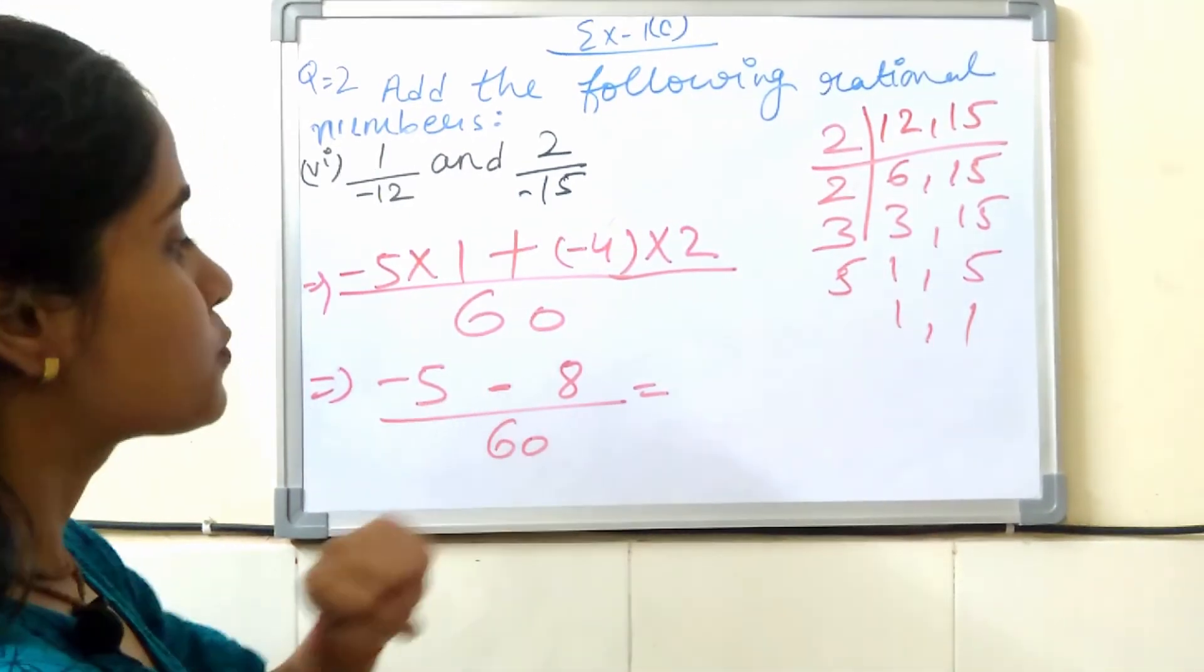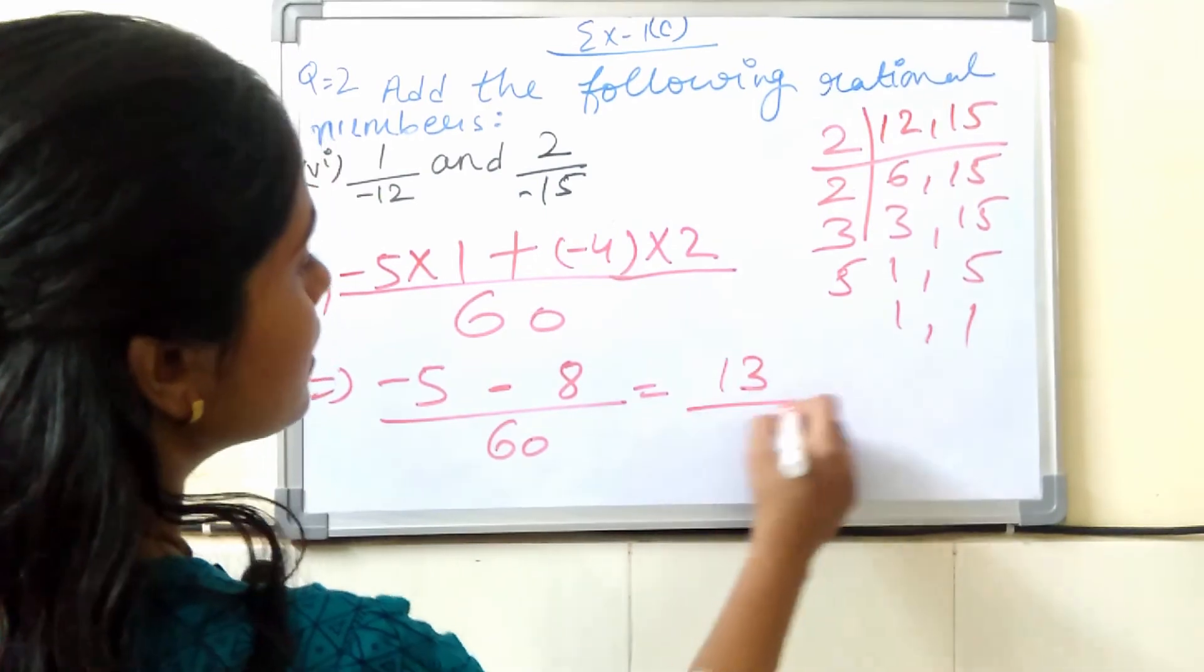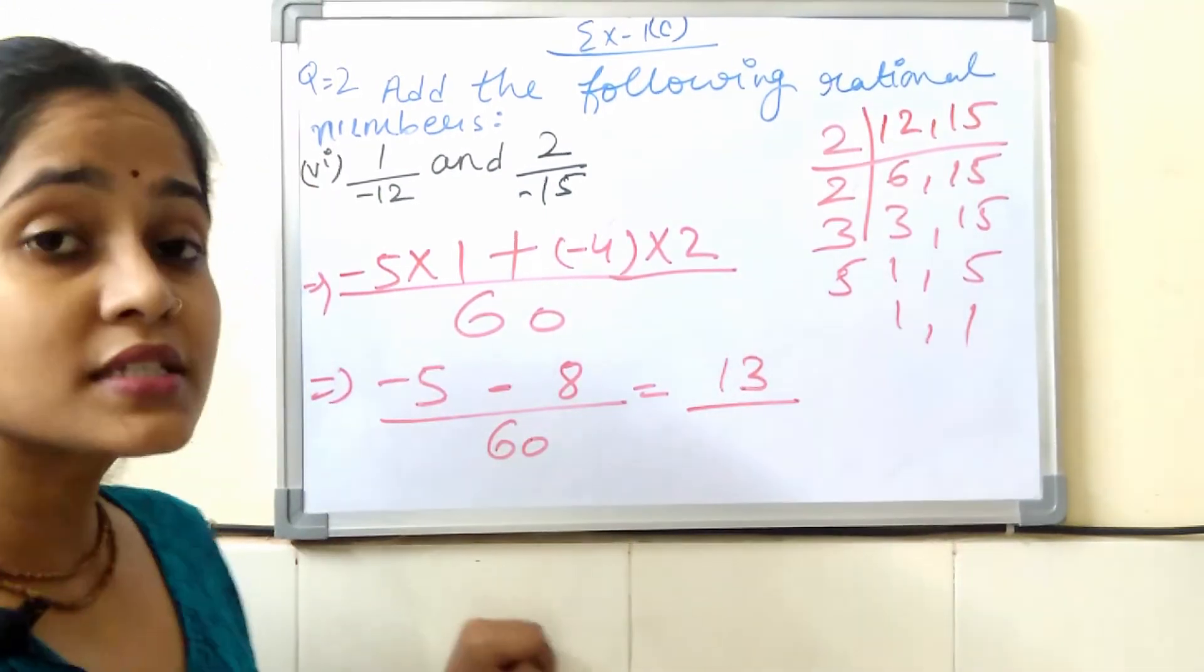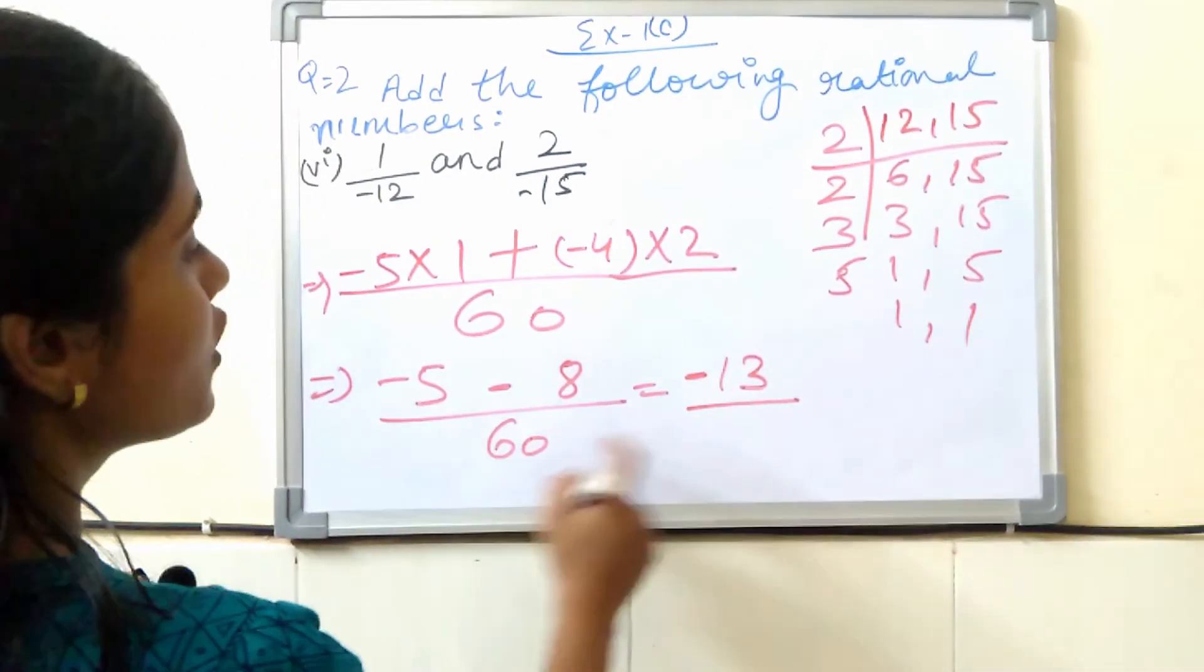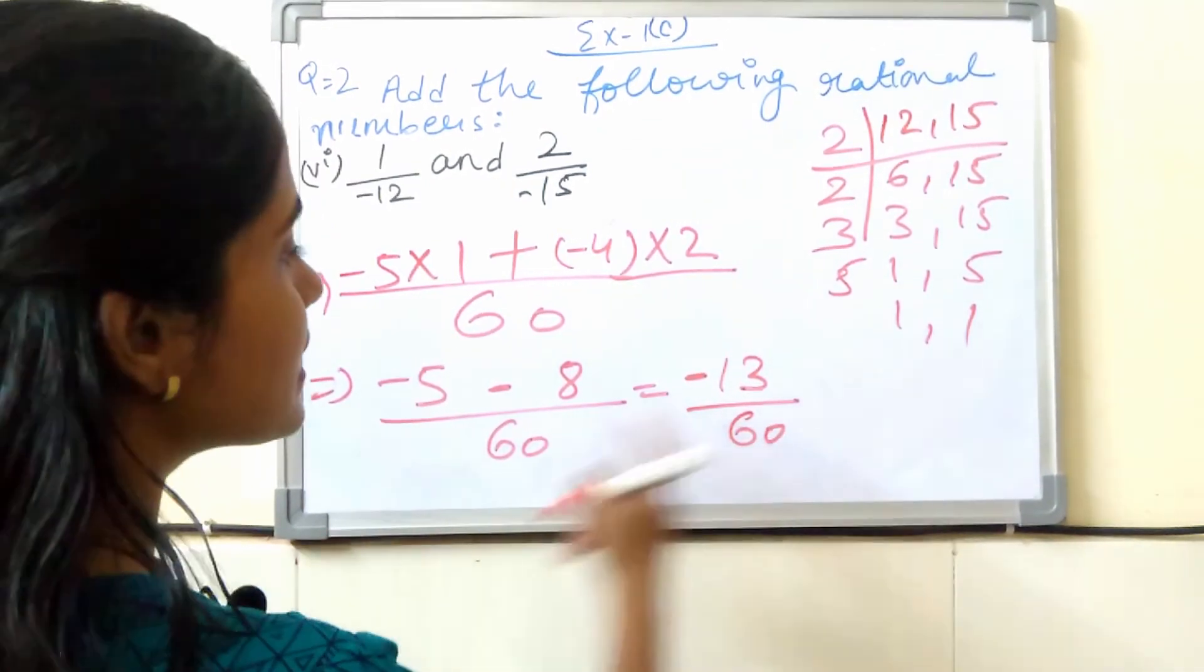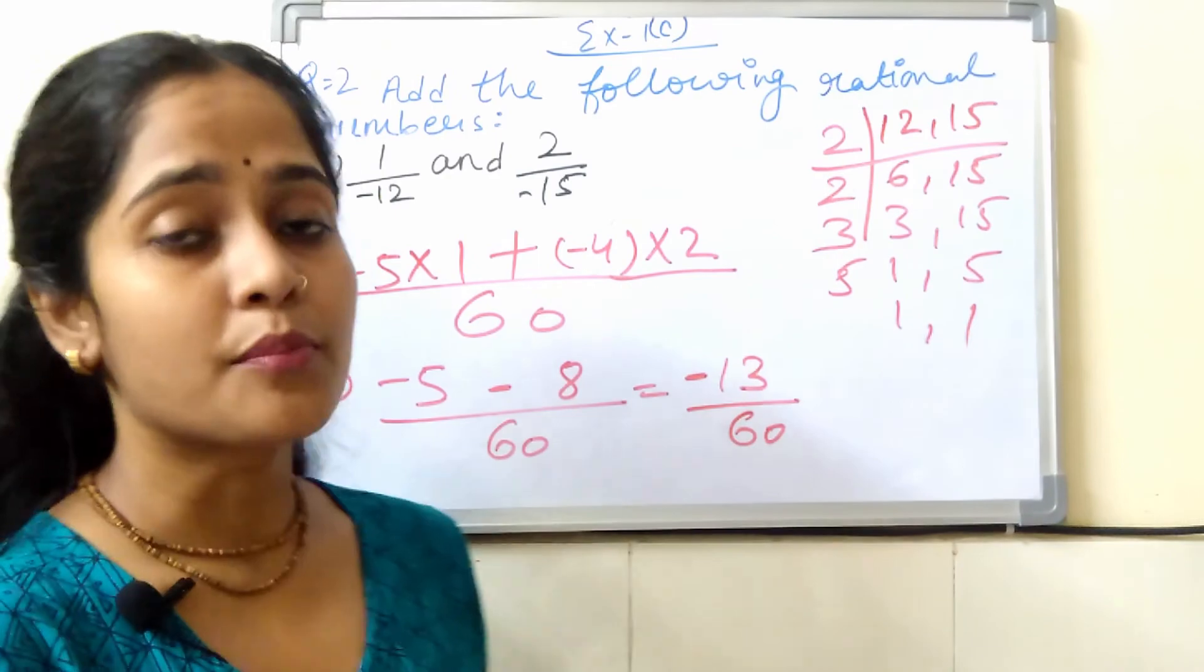So, minus and minus give plus when multiplying, but 5 plus 8 is 13. When both terms are negative, what will the sign be? Minus. Okay, my child. We will add the minus sign. And 60 is as it is. So, this is your answer.